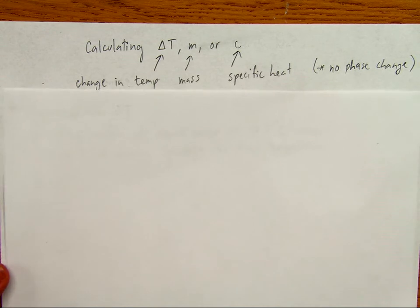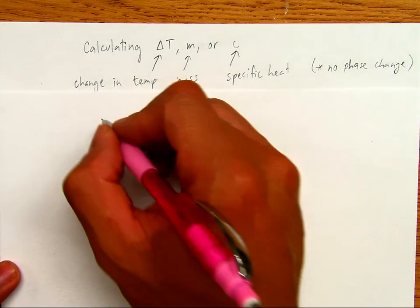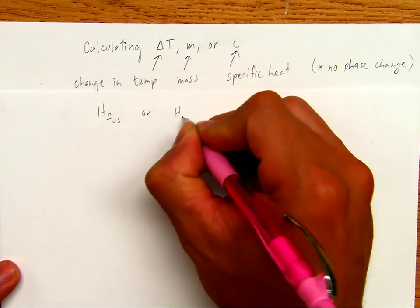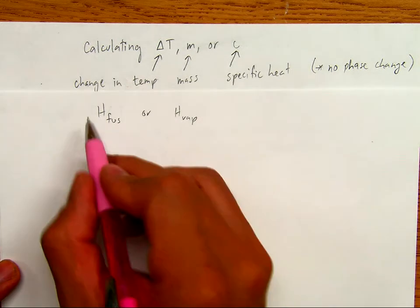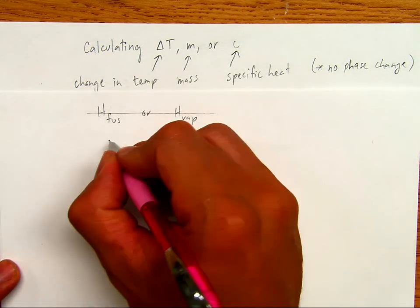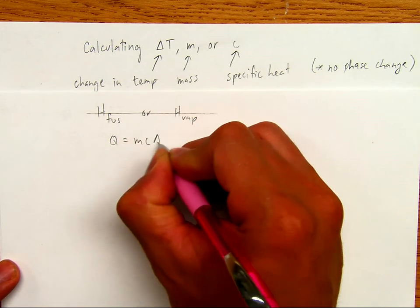Alright, so first, whenever you have a phase change, we're going to use the heat of fusion or the heat of vaporization. But in these problems, we do not have a phase change, right? So when there's no phase change, we're going to use Q equals mc delta t.